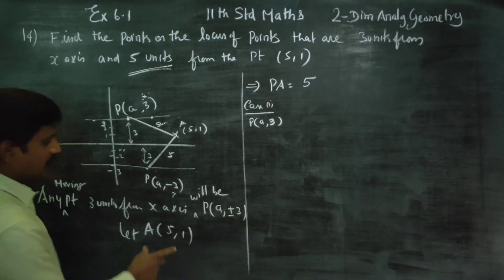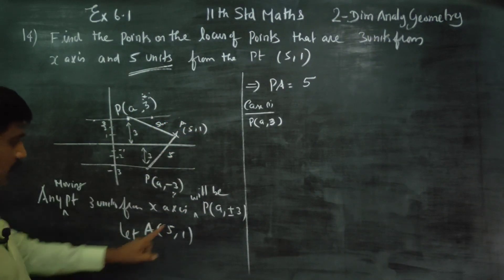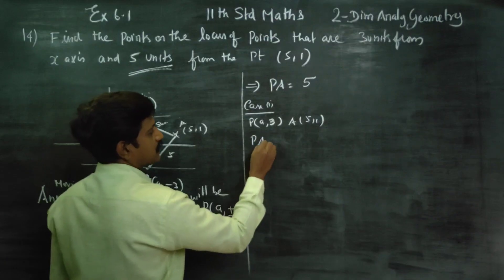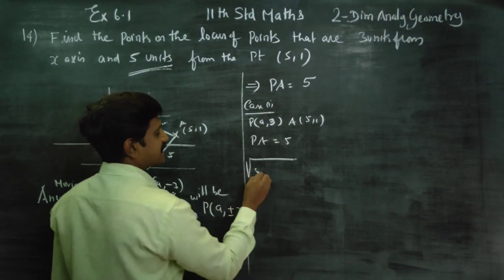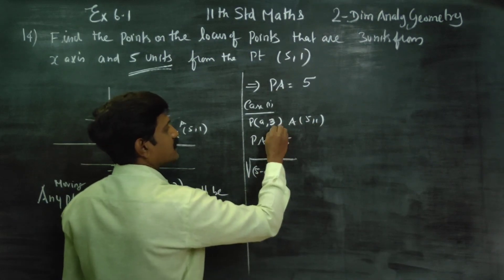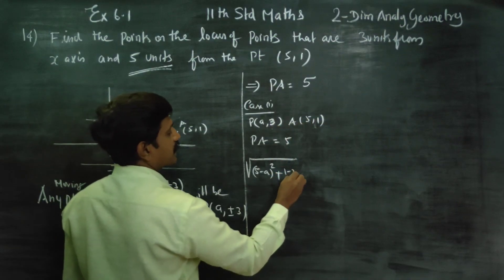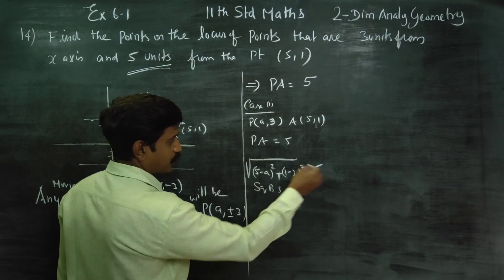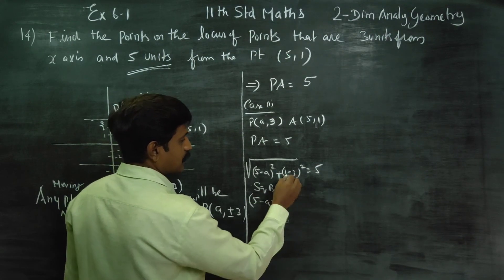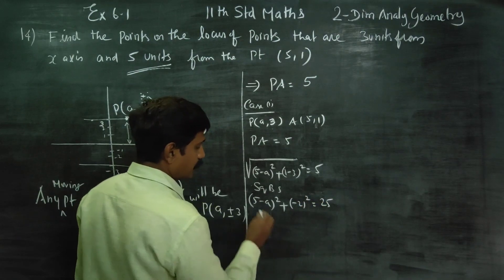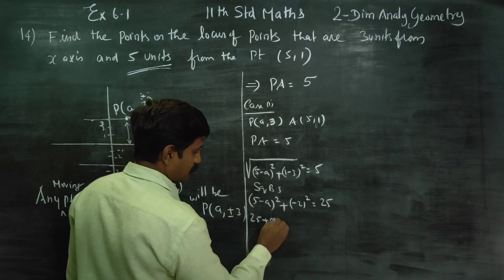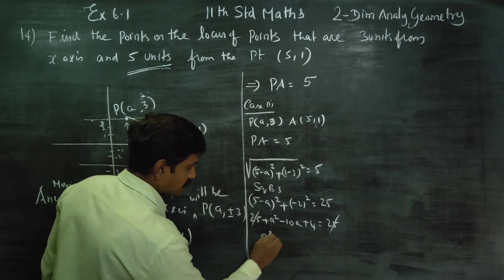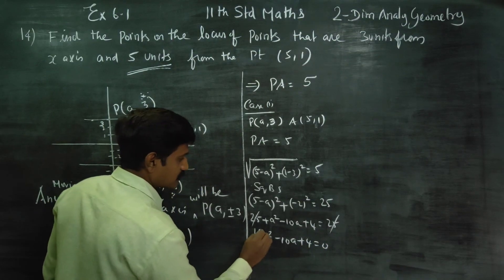Let A = (5, 1), P = (a, 3). PA = 5. Using the distance formula: PA = square root of (x2 minus x1) whole square plus (y2 minus y1) whole square. That gives square root of (5 minus a) whole square plus (1 minus 3) whole square = 5. Squaring both sides: (5 minus a) squared plus (minus 2) squared = 25. Expanding using (a minus b) squared = a squared plus b squared minus 2ab: a squared minus 10a plus 4 = 0.